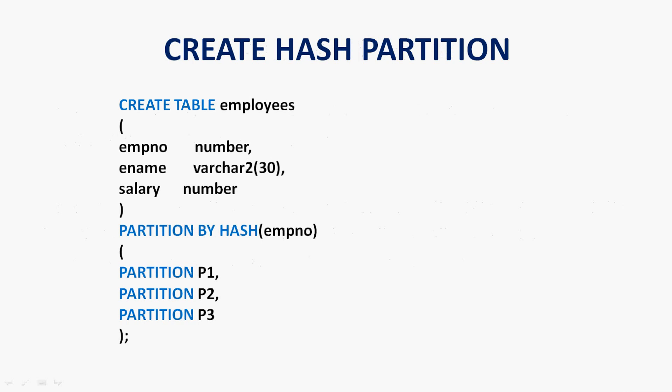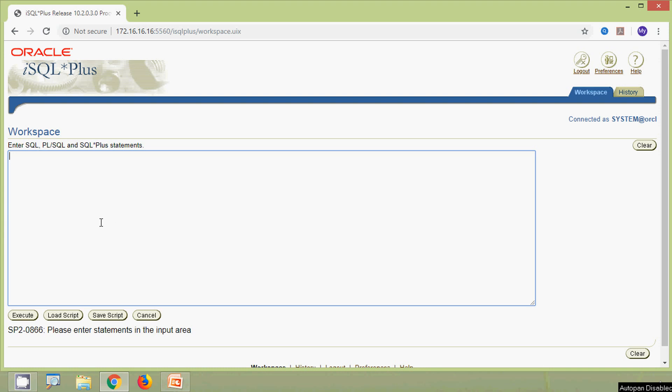Now we will see how to do hash partitioning. First we will create a table named employees with columns emp number, name, and salary. We will do partition by hash using emp number as the partition key, with different partitions p1, p2, and p3. Whenever we insert values into the employees table, Oracle automatically hashes the data into these different partitions.